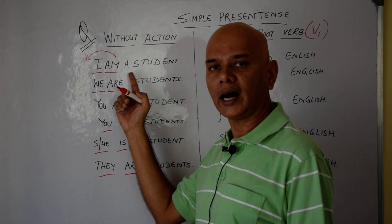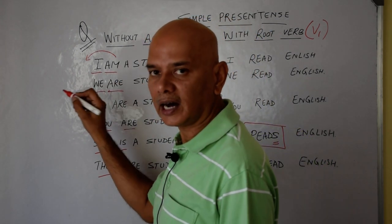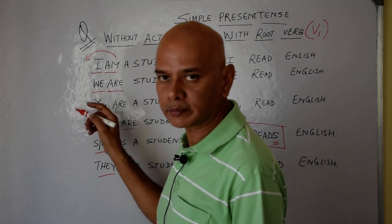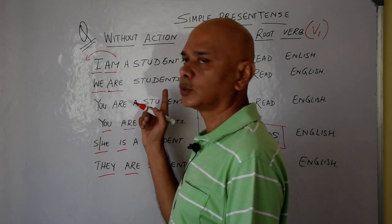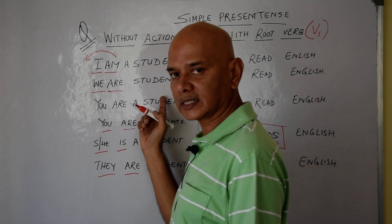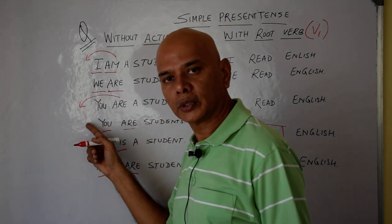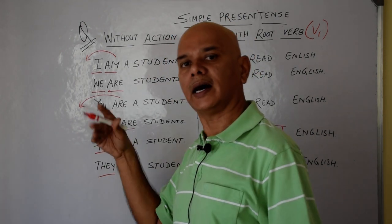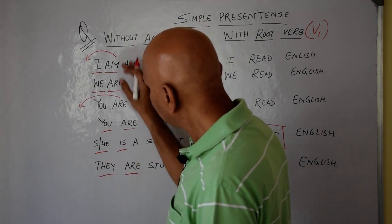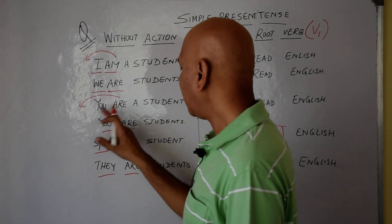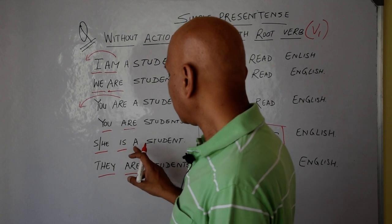Answer: yes, I am a student. No, I am not a student. Are we students? — first person plural. Are you a student? — second person singular. Answer: yes, I am a student. Are you students? The supporting verb always comes outside in the question.